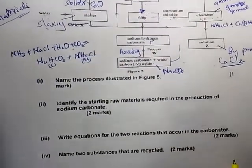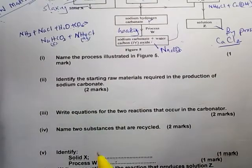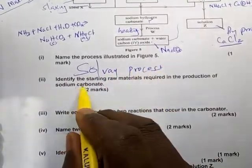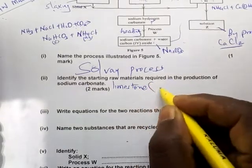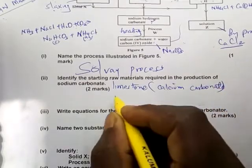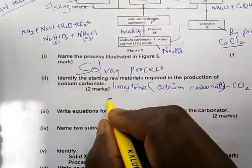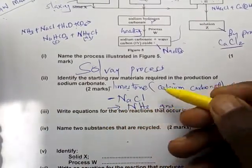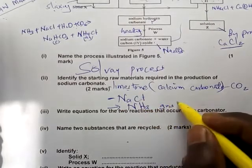Now going to the questions: name the process illustrated — it is called the Solvay process. Identify the starting raw materials: limestone (calcium carbonate), sodium chloride, ammonia gas, and water. These are the major raw materials needed. Water is needed to mix with sodium chloride to form the brine.